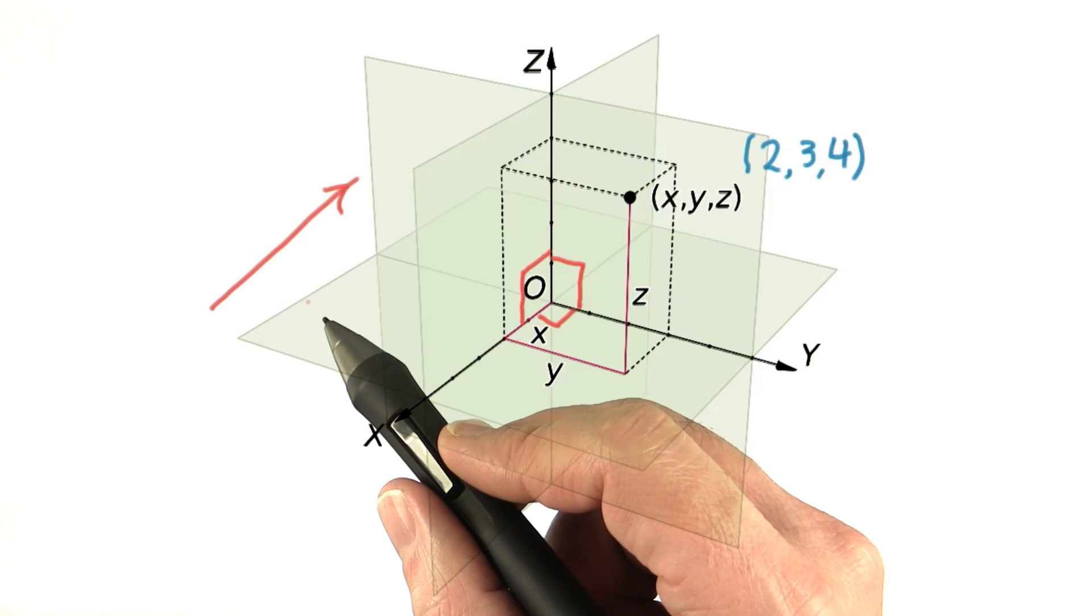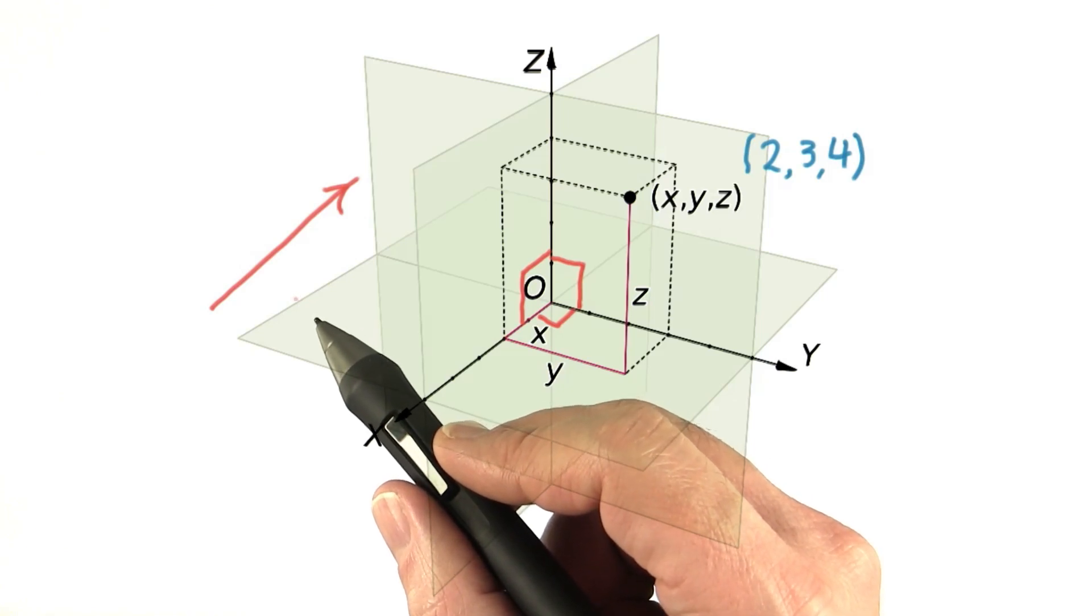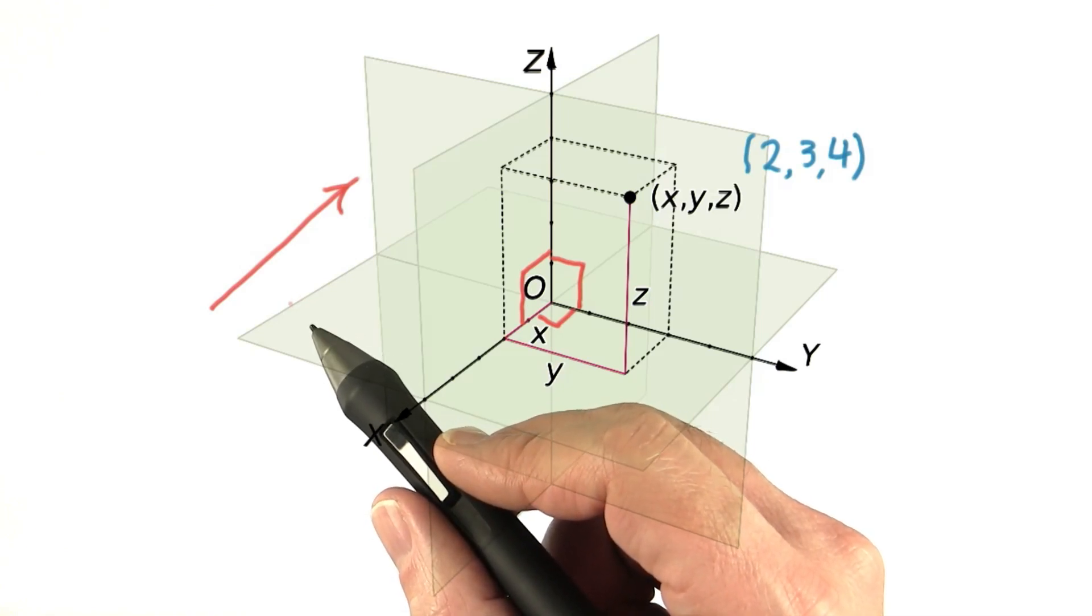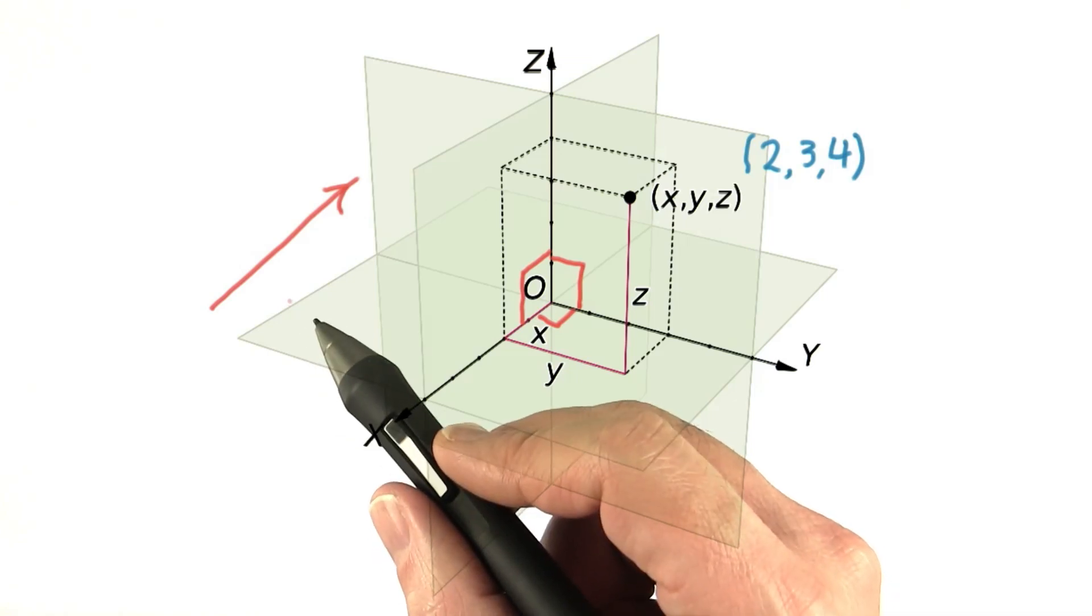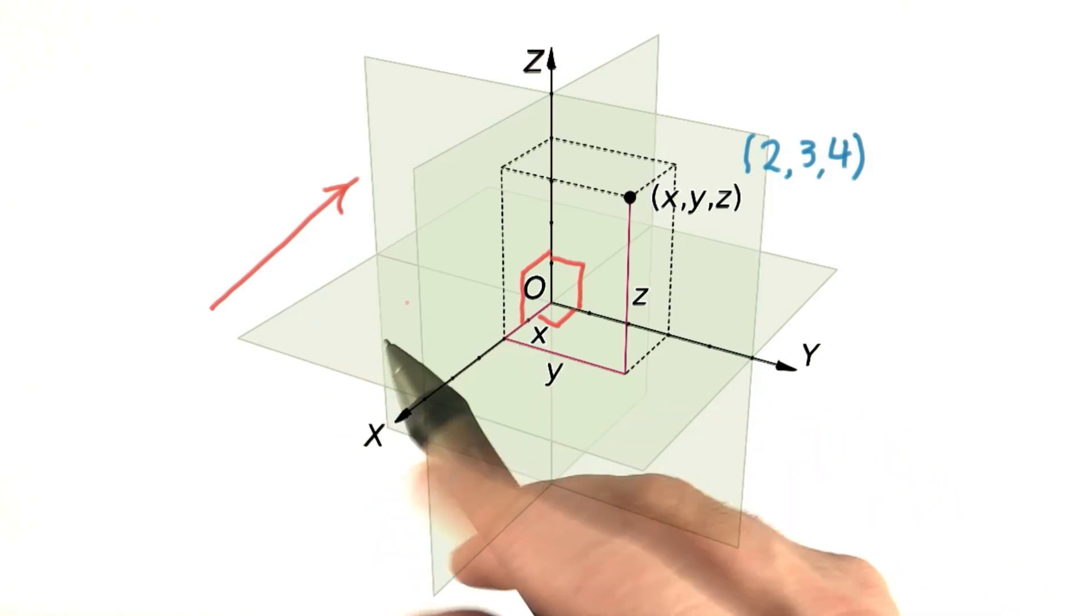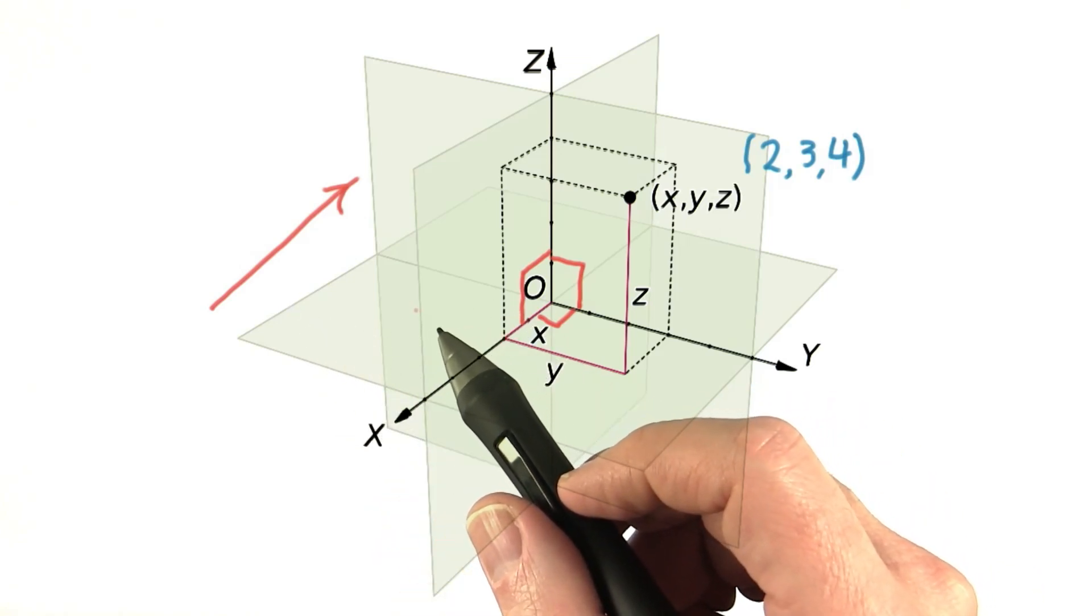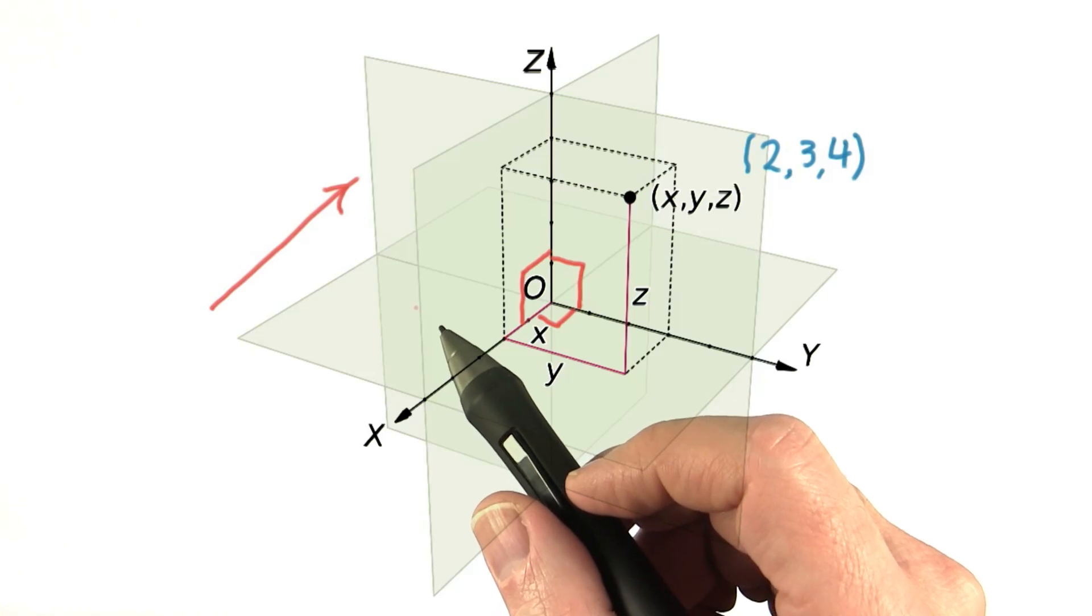However, this movement is not fixed in any particular location in space. To understand the difference, think about time. A specific time is like a point. An amount of time is like a vector. It specifies a duration, but no starting time is given.